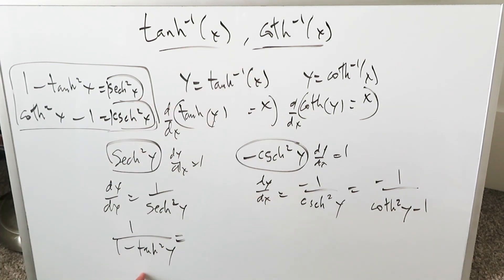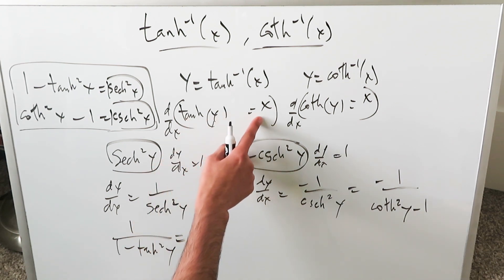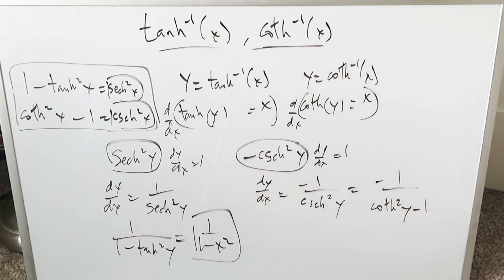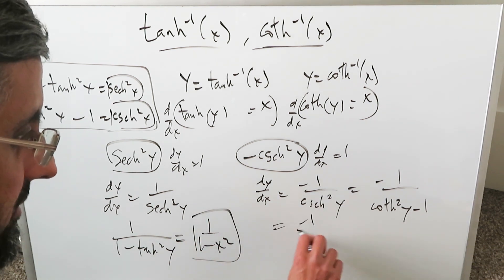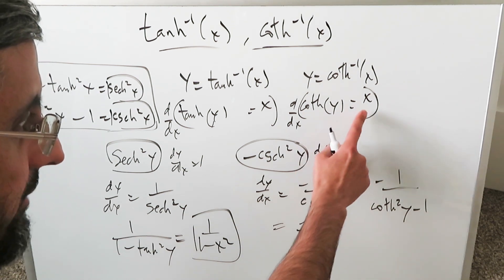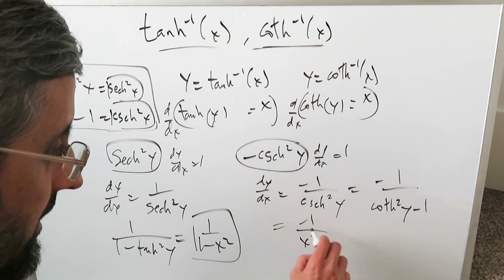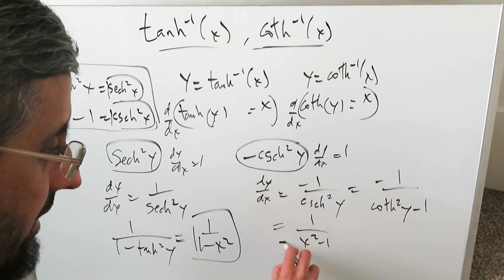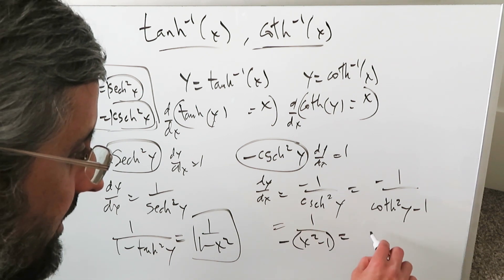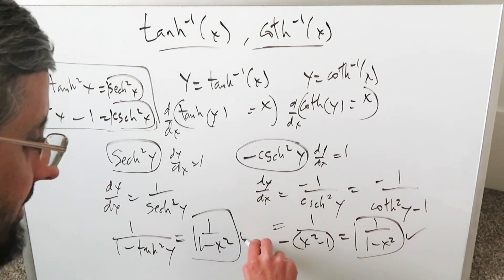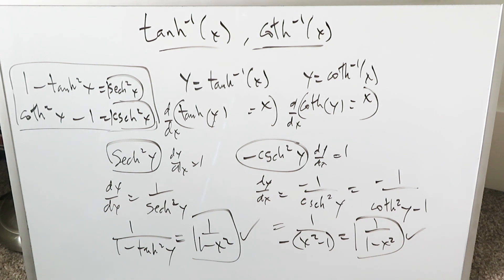When you do the substitution, hyperbolic tan of y equals x, so tan squared y equals x squared, giving you 1 divided by (1 minus x squared). That's the derivative of inverse hyperbolic tan. Over here, you have minus 1 divided by hyperbolic cosecant squared y, and since cosecant y equals x, that's x squared, giving x squared minus 1. Bring the minus into the denominator and parenthesize: you get 1 divided by (1 minus x squared), and the derivative is exactly the same.